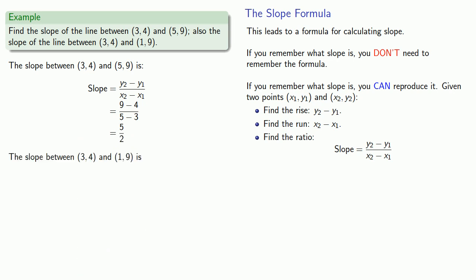If we want to go between (3, 4) and (1, 9), we can still find the difference in the y values, and that gives us a slope of 5 over -2, or -5 halves.